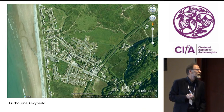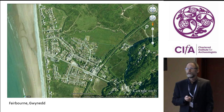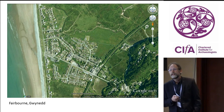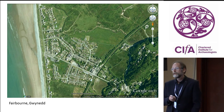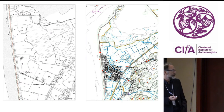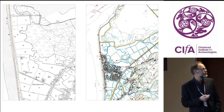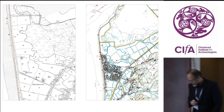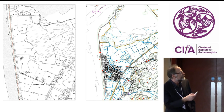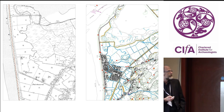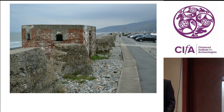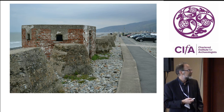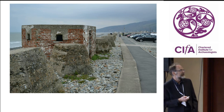Looking briefly at one case study: Fairbourne lies at 0.35 metres, well within the heavy risk factor. It's a small settlement developed in the 1890s by Solomon Andrews — later associated with McDougall's — as a potential holiday resort next to Barmouth. The 1900 OS map shows the settlement just getting underway, but there's a red line showing a Scheduled Ancient Monument over a mile long. The Scheduled monument is a tank trap — concrete pillars and a lookout running around the beach for over a mile — one of the best preserved examples in the country.